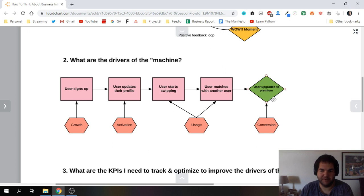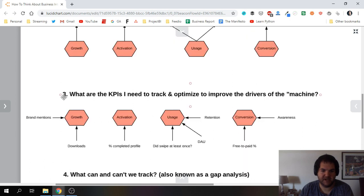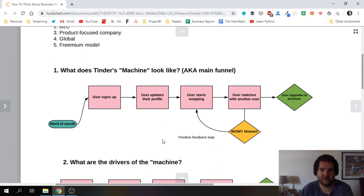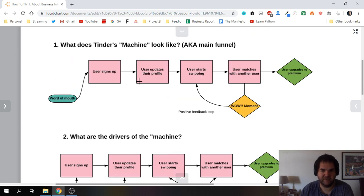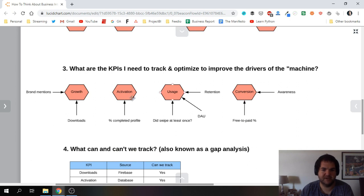So once we kind of understand the main drivers, the next thing we can do is actually understand what are the KPIs I need to track and optimize to improve the drivers of the engine. So this is very much a top-down hierarchical model which you can use for any business, right? Starting with the funnel, move down to the drivers, and then next we're talking about KPIs. So we're talking about growth - brand mentions is going to probably affect growth, app downloads. Activation - the percentage of complete profiles.